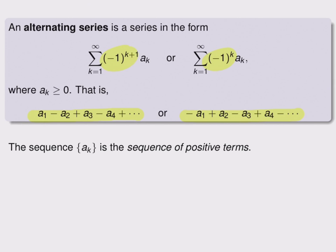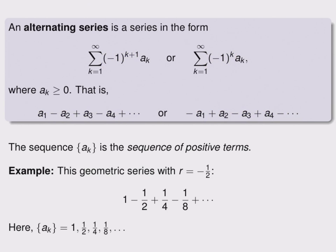The sequence of a_k's is called the sequence of positive terms. It's the sequence we get when we ignore the negative signs in front of the terms of an alternating series. An example of an alternating series that you've already seen is any geometric series with a negative ratio, as you can see below.